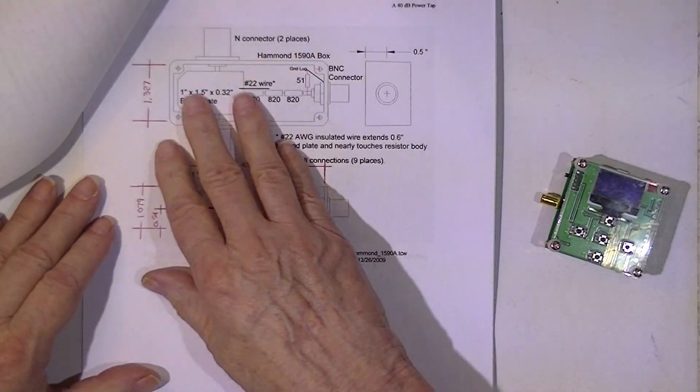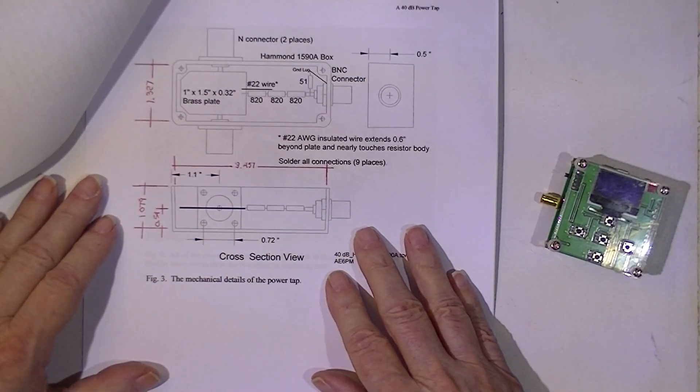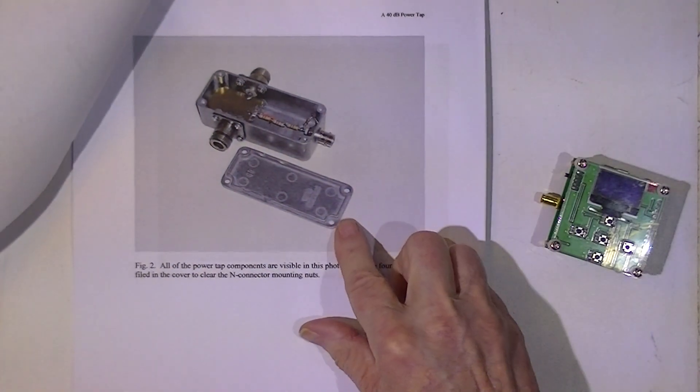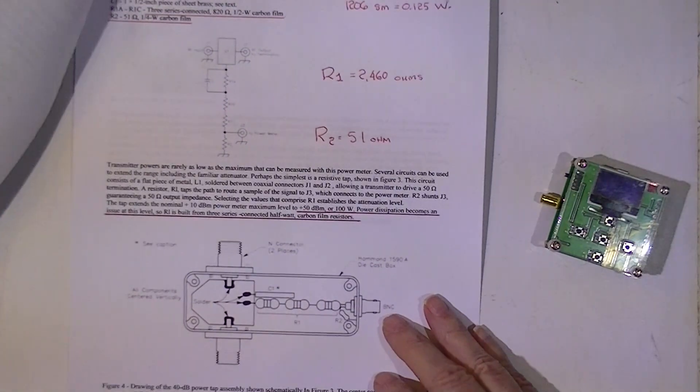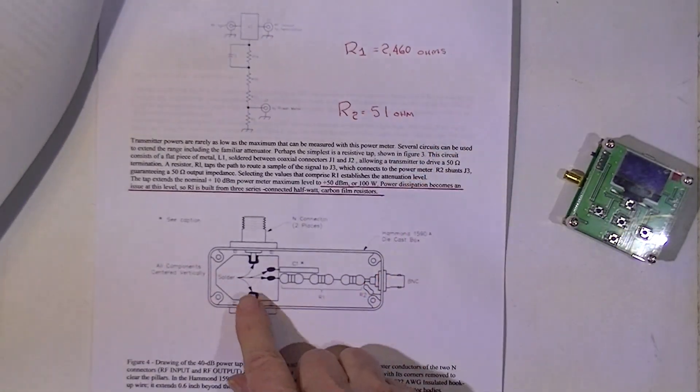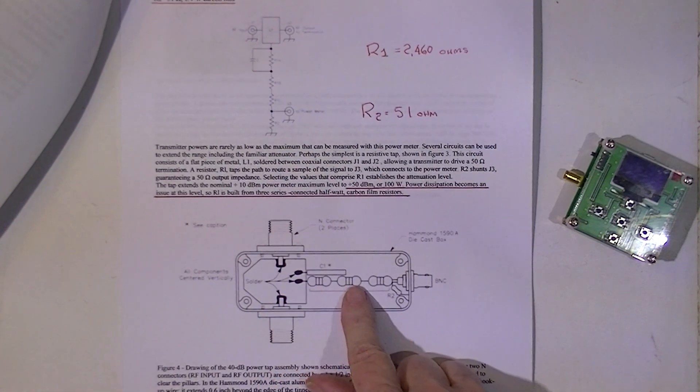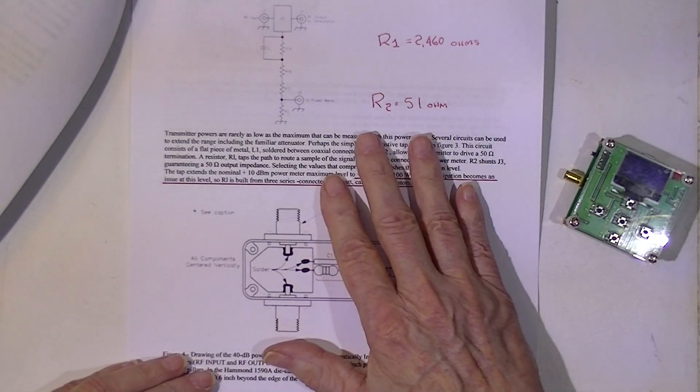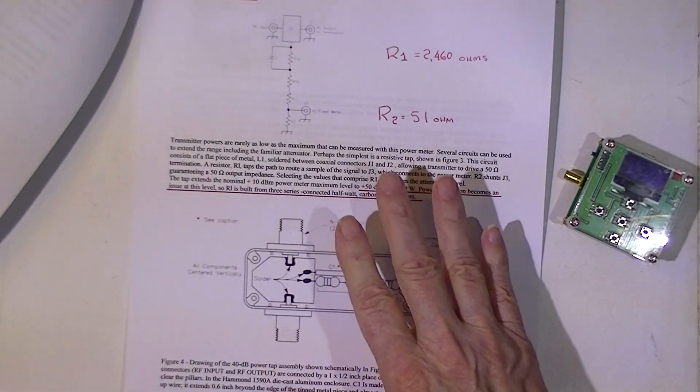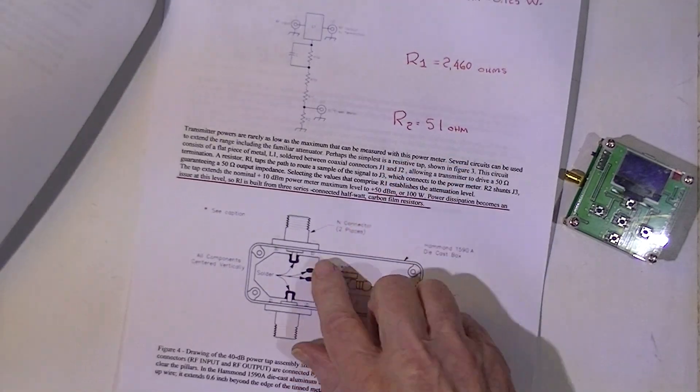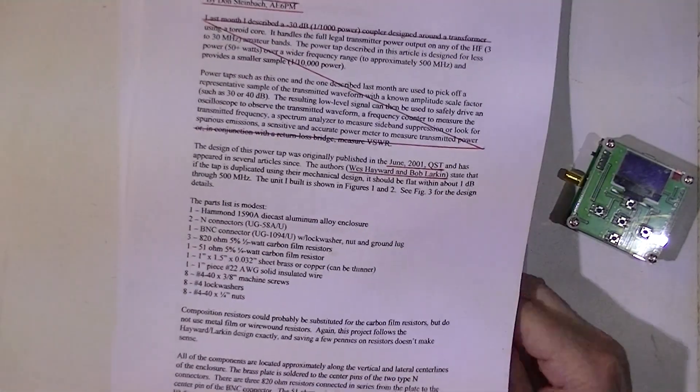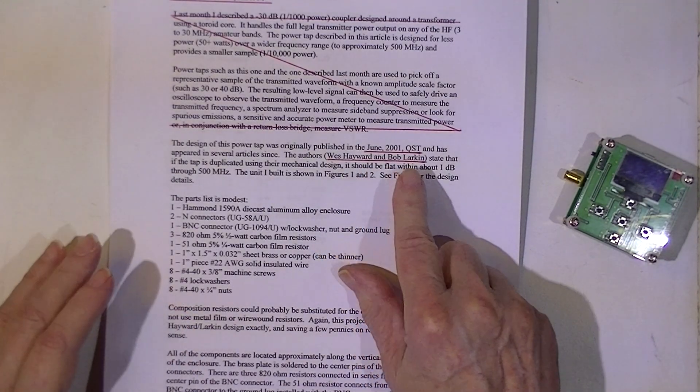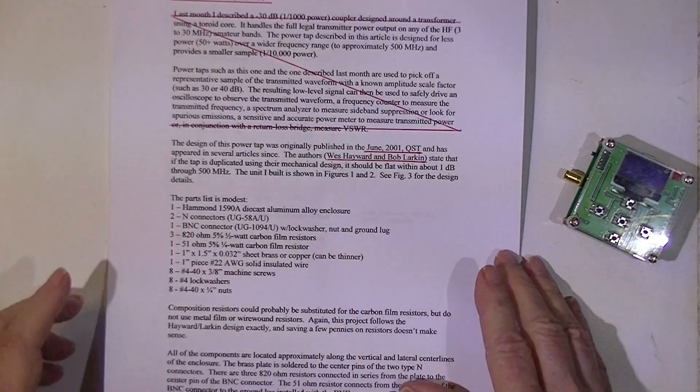In any event, Hayward and Larkin developed a 40 dB tap. This is a drawing of that mechanism. This is a photograph of it. This is another article, and it is just exactly the same. There are two or three other ones on the web that are exactly the same as this, probably because the Hayward Larkin design was very, very good and very repeatable.